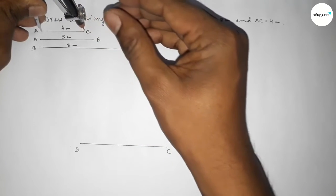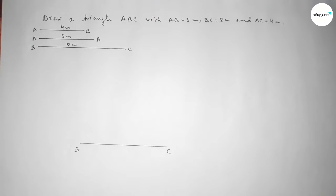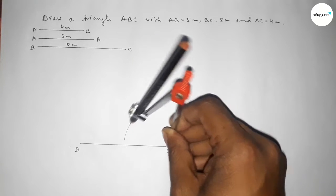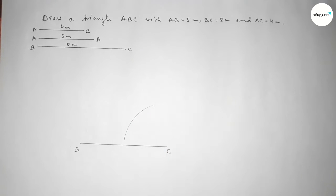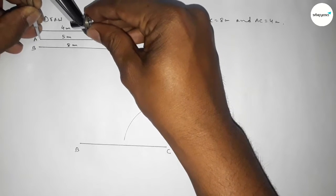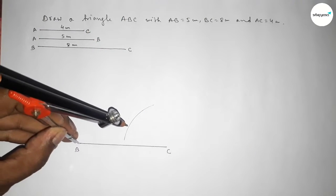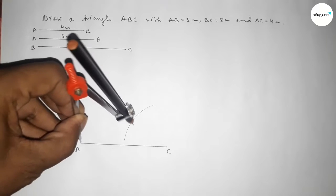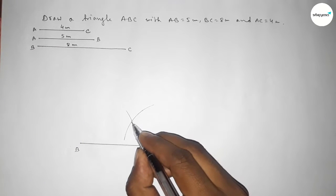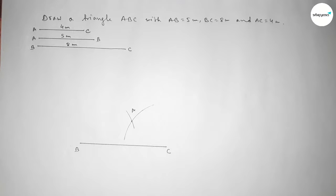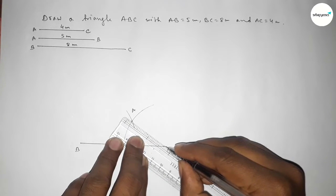Now taking the length AC equal to 4 centimeter, putting the compass on point C and cutting an arc. Then taking the length AB equal to 5 centimeter using the compass, putting the compass on point B and cutting an arc. Both curves intersect at point A.